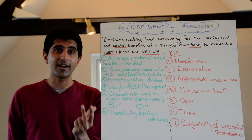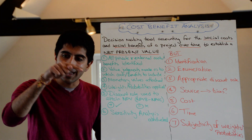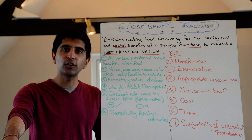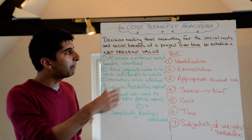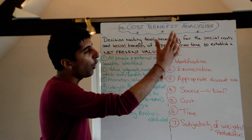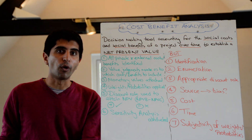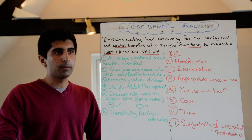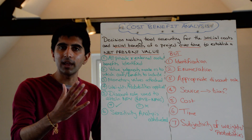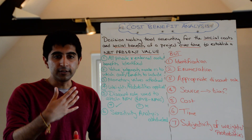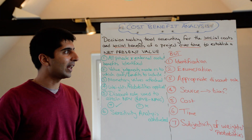The external costs being the negative externalities. For social benefits, the private benefits and the external benefits — the positive externalities — will be included. But this is over time, so they don't have to just be occurring right now. They might be occurring in the future: in 5 years, 10 years, 15 years, whatever.